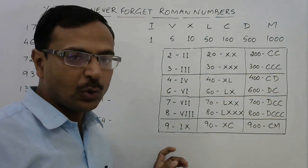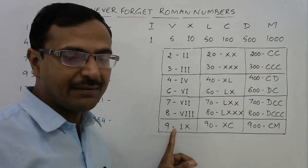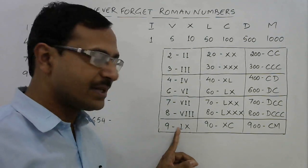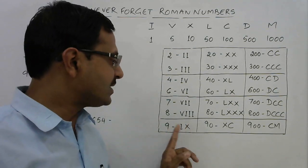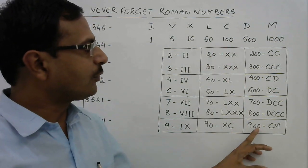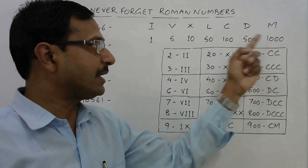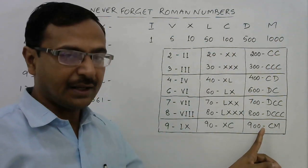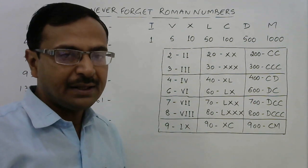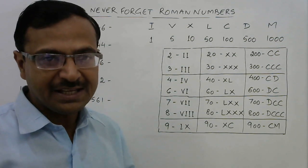For 9: it is IX — X is larger and I is smaller, so the larger value is on the right, meaning 10 minus 1 equals 9. Scaling up, 90 is XC and 900 is CM, because 1000 minus 100 is 900. If you know this table, every Roman numeral will be very easy.